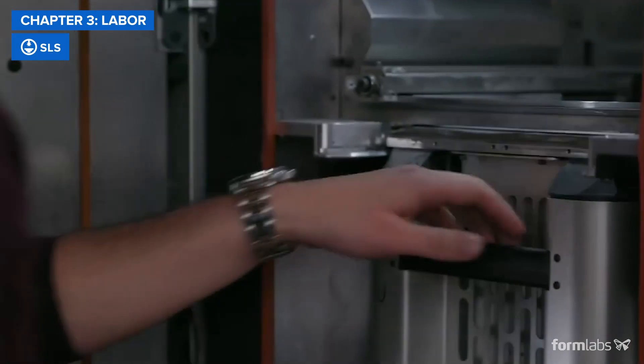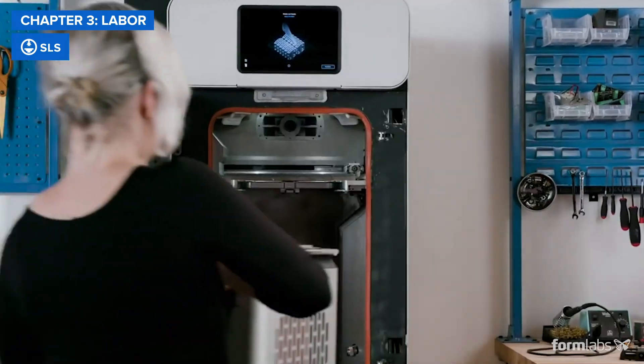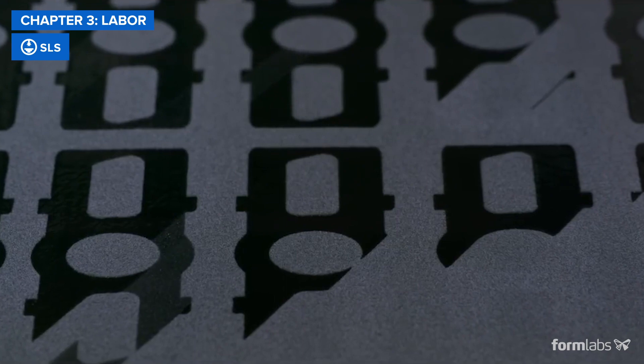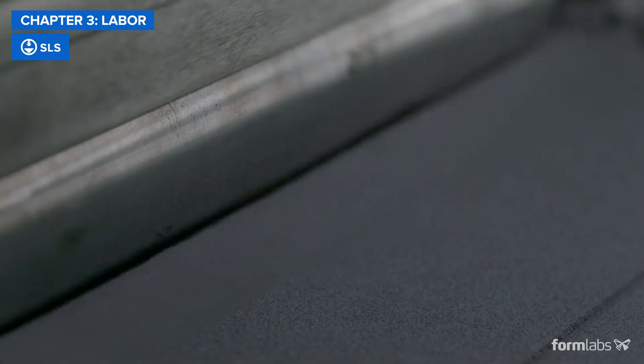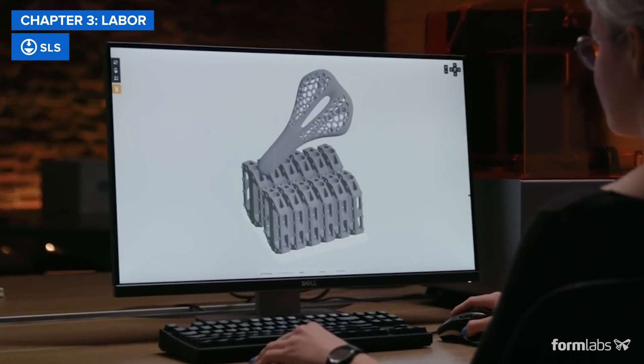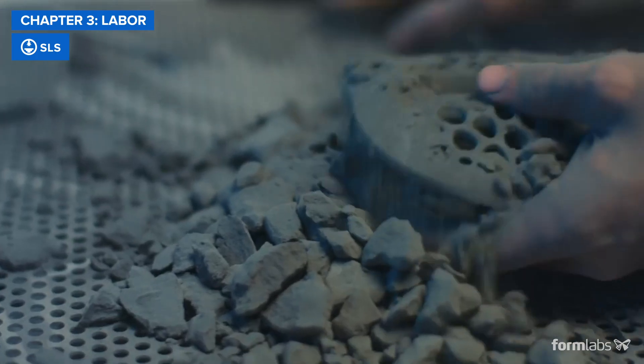SLS 3D printers require more setup time for handling the powder material and considerably more maintenance between prints, but that's normally divided among many parts in a single build. Because of this, post-processing SLS parts can be the least labor-intensive of the three processes when processing a full batch of parts. Parts just need to be removed from the powder that surrounds them and cleaned of the excess material.